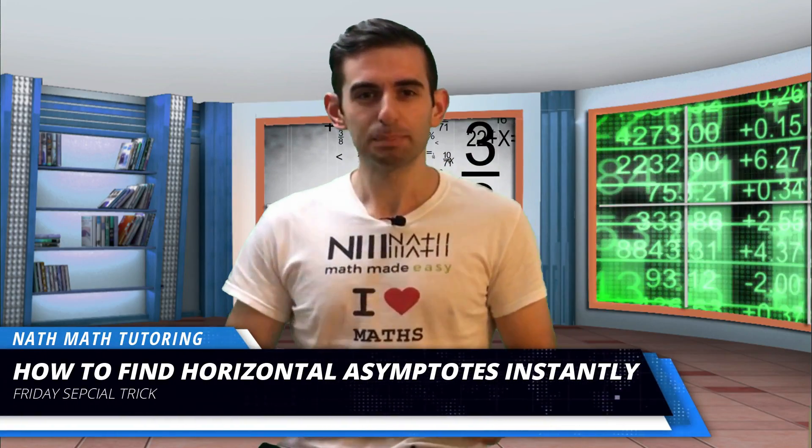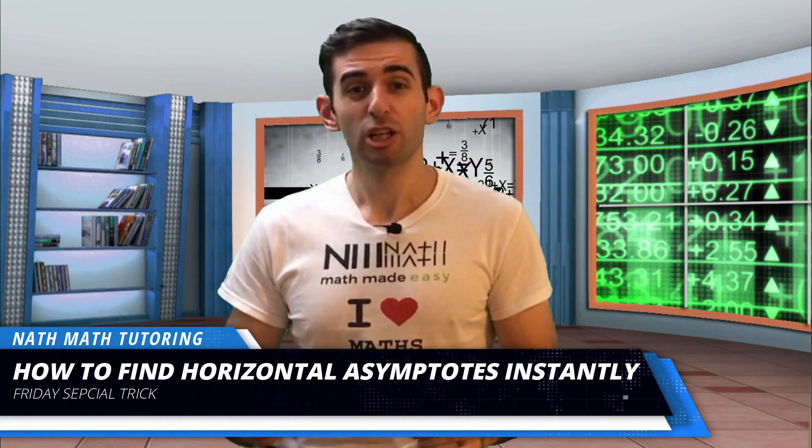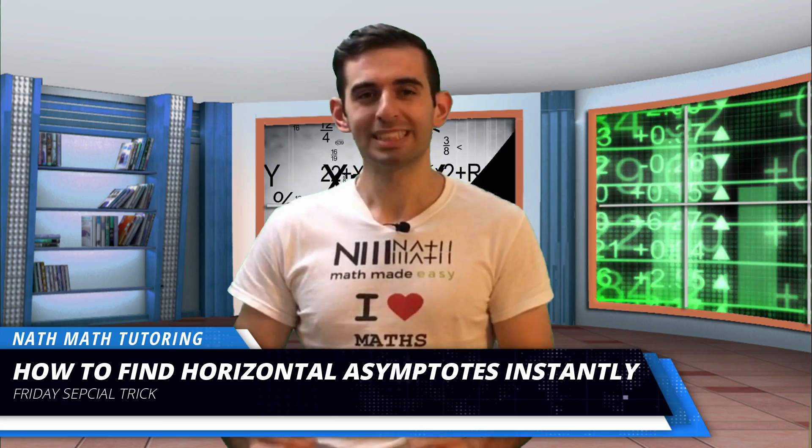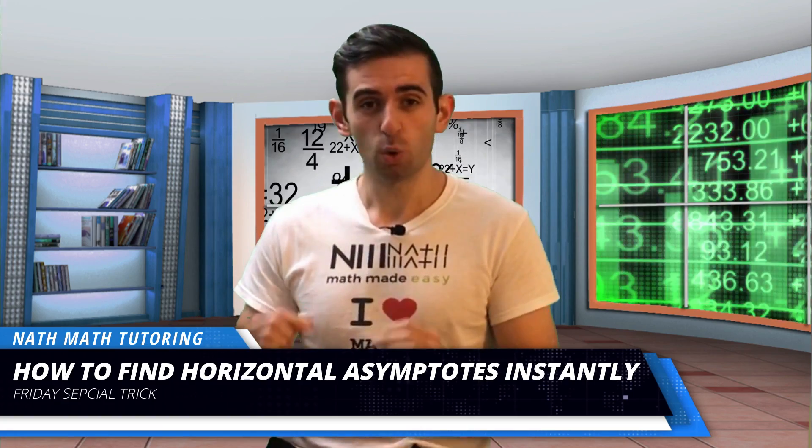Welcome everyone to another Friday special trick. Today we're going to learn how to find horizontal asymptotes instantly. It will literally take two seconds with this awesome trick, so make sure to stick to the end.